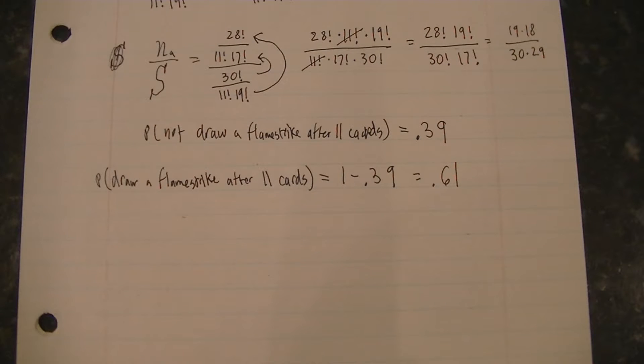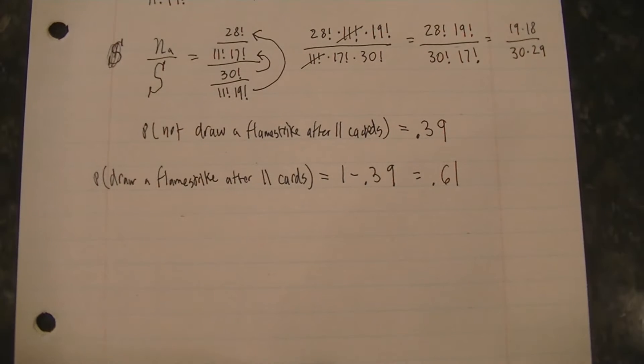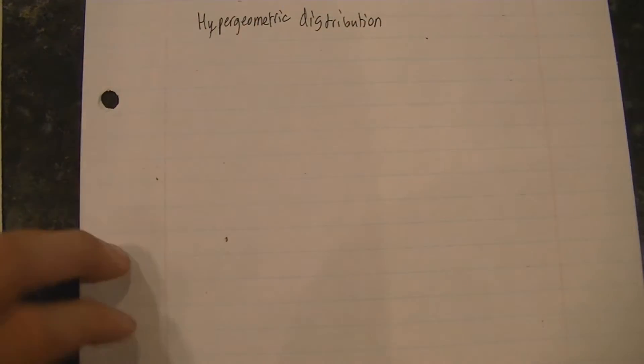Last time we looked at the sample space method, which used combinatorics to determine the probability of drawing at least one flamestrike by the end of 11 draws. And now we will do the same exact problem but using the hypergeometric distribution,